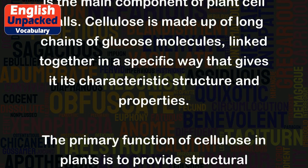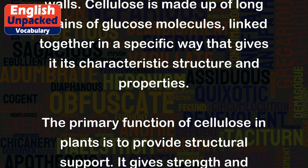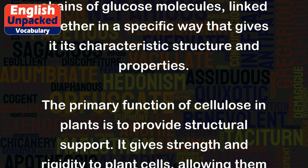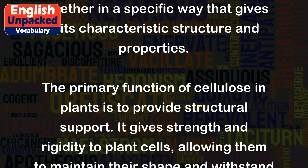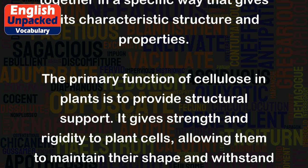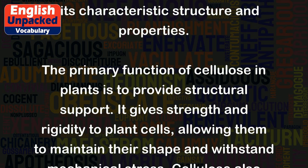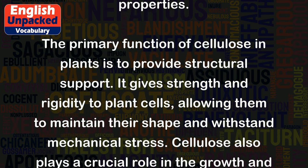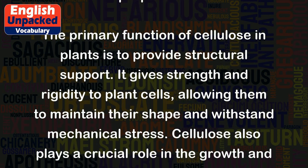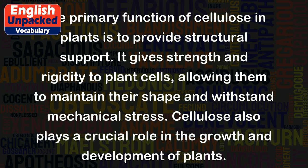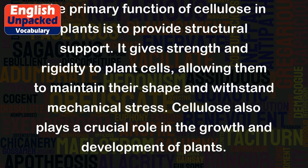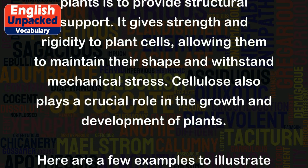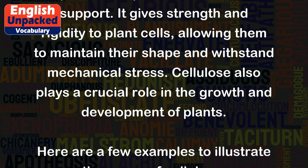The primary function of cellulose in plants is to provide structural support. It gives strength and rigidity to plant cells, allowing them to maintain their shape and withstand mechanical stress. Cellulose also plays a crucial role in the growth and development of plants.